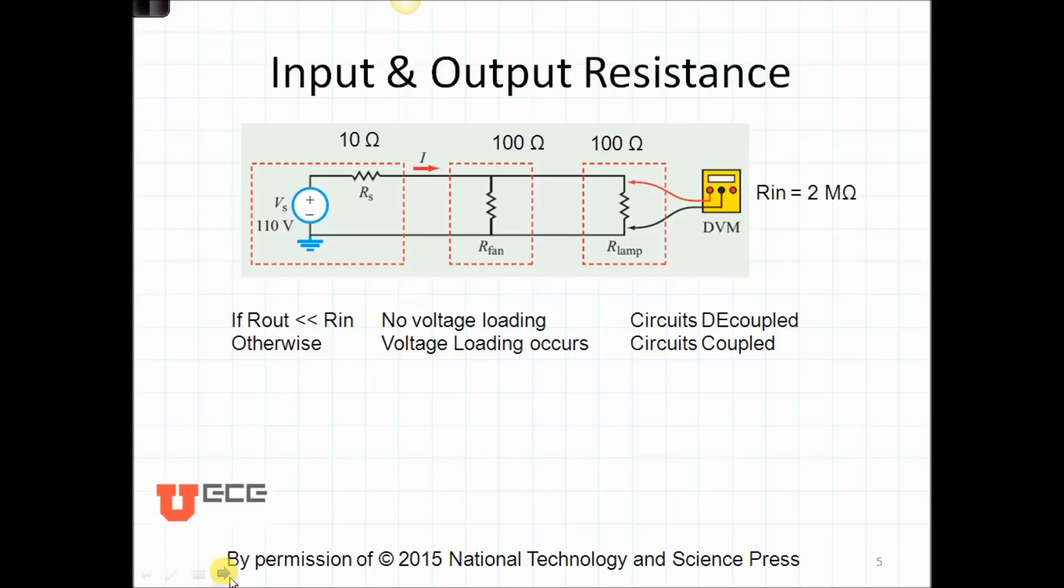Now let's talk about the input and output resistance. The input resistance is the resistance looking into the circuit, and the output resistance is the resistance that's looking into the output part of the circuit. So here is an output resistance, and here is another input resistance. Let's number these. This is Rout for the first block, Rin and Rout for the second block, and Rin for the third block.